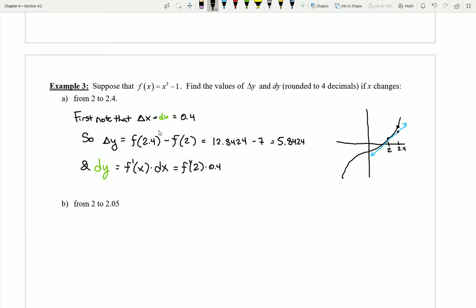I can also see here that f prime of 2 is going to be really easy to compute because f prime is just 3x squared.